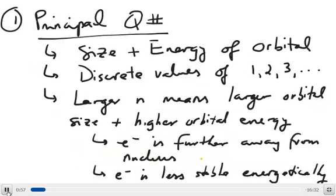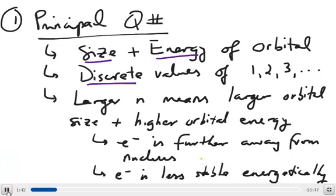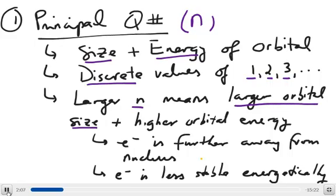The first quantum number we want to talk about is called the principal quantum number, symbol n. This represents the size and the energy level of the orbital. Quantum numbers, like all quantum mechanical properties, have only discrete values. A larger value of n — say 3 versus 2 — means a larger orbital size and higher orbital energy, so the electron is more likely to be further from the nucleus and is less stable energetically.